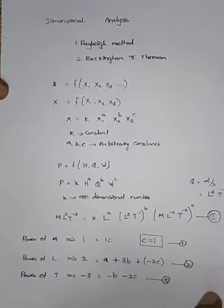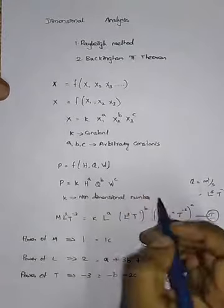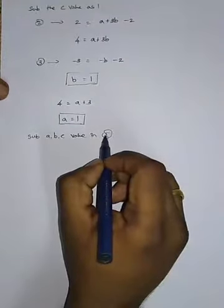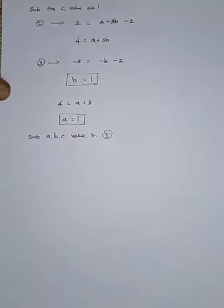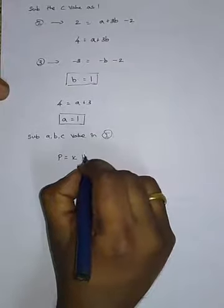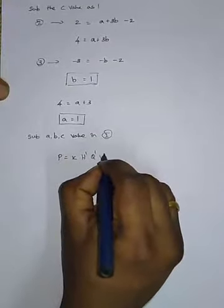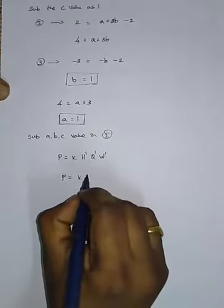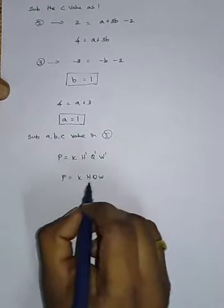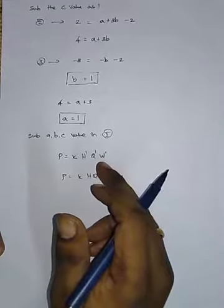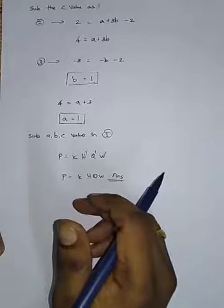Substituting A = 1, B = 1, C = 1 into equation 1, you get: P = K · H¹ · Q¹ · W¹, which can be written as P = K · H · Q · W. This is the answer. There are only four independent variables so the problem is straightforward.